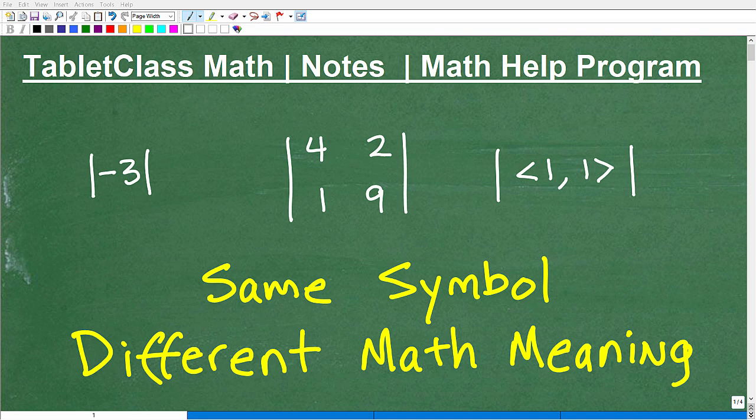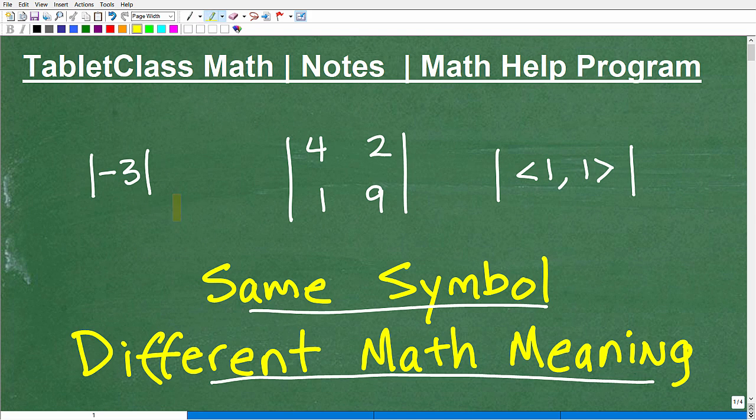So when we learn a symbol or a particular mathematical notation, we're like okay, I got that, I understand it. But what happens when we use the same symbol and it has different meanings? So it can be a little confusing, but this is no different than the English language. When you learn a particular word or a verb, you can have different meanings. Well, in mathematics, same thing here.